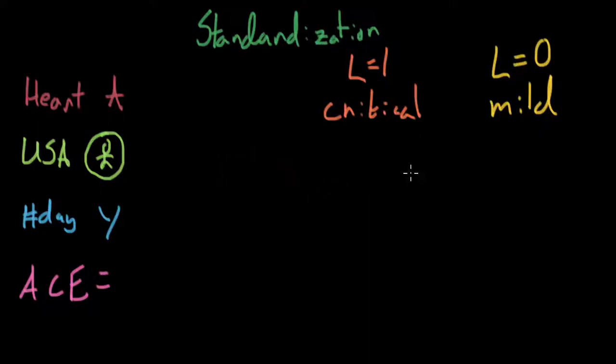Last time we talked about assigning the critical and the mild patients to different types of treatments. For example, the critical patients would receive a 90% chance of getting the heart, whereas the mild patients would get a 25% chance of A.